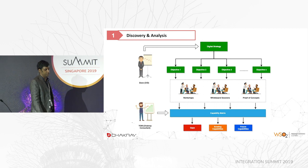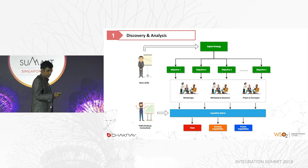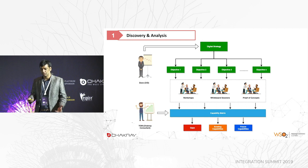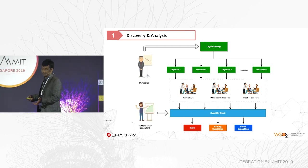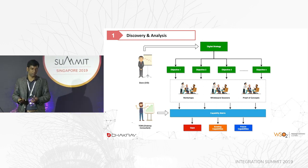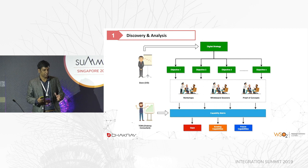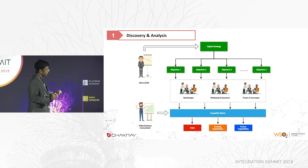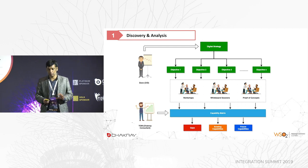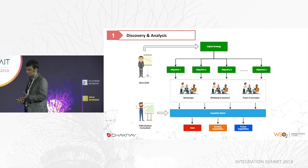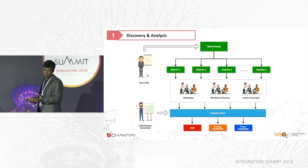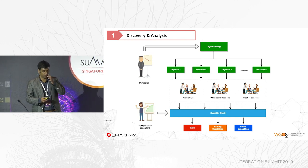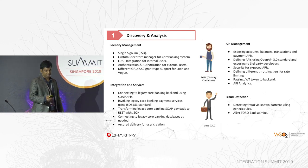Dave, the CIO, works with Chakra consultant Tom. Dave has a digital strategy and different objectives. As Chakra, we conduct multiple workshops, whiteboard sessions, architecture sessions, and proof of concepts as needed. We compare these with our capability metrics — based on our experience we have set up capability metrics — and identify gaps, existing capabilities, and future capabilities. We hand over a traffic light report or health check report to the CIO so they can evaluate where they stand and what improvements are needed. That is the discovery and analysis part.